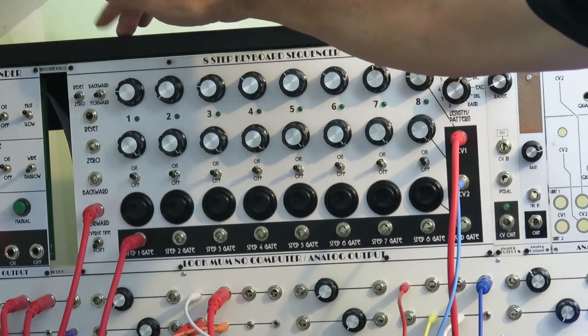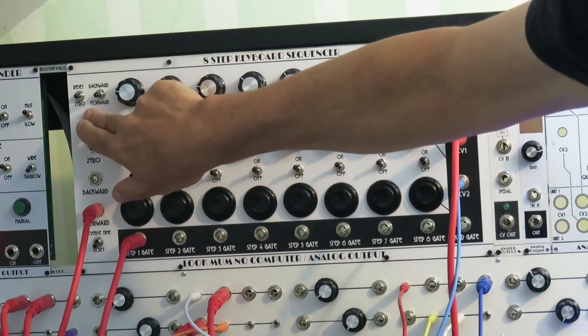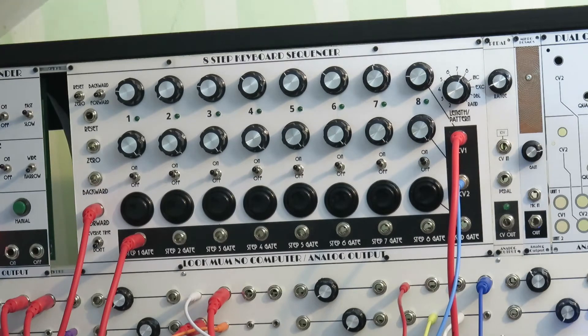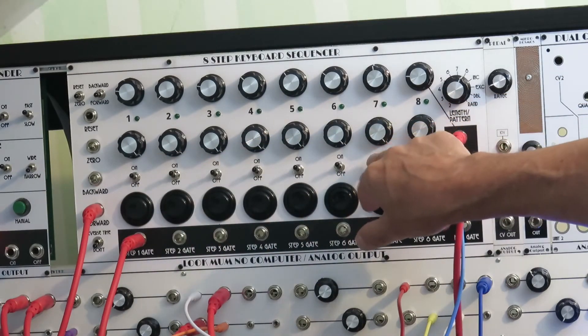You can also send all the control voltage to zero and all the gates to zero using the zero switch. Now that's in the original LMNC sequencer. And there's also a reset gate in the original. For some reason, there isn't a zero gate in the original. So I added that.